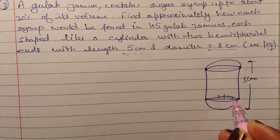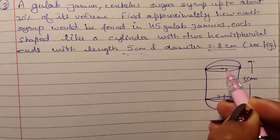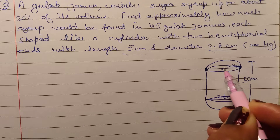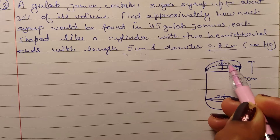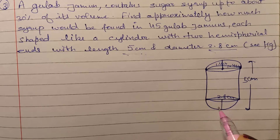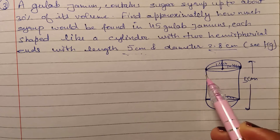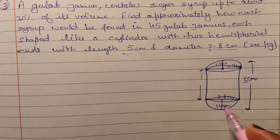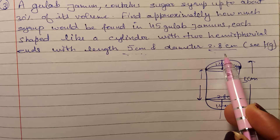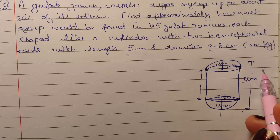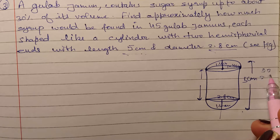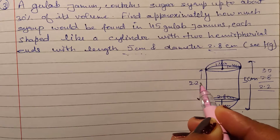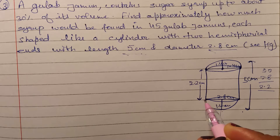अगर diameter 2.8 cm है तो radius 1.4 cm होगा। Total length 5 cm है — इस side से 1.4 गया और इस side से भी 1.4 minus हुआ। तो total 5 में से 2.8 minus हो रहा है। Minus करने के बाद 2.2 cm आ रहा है — यही बीच में cylinder की height है।